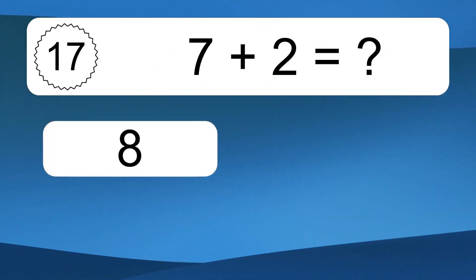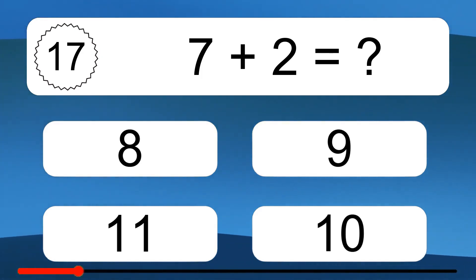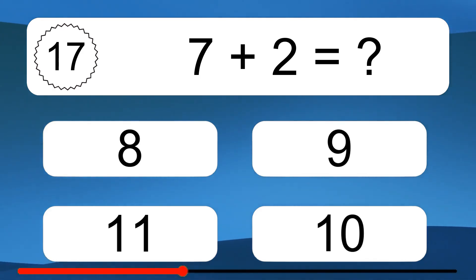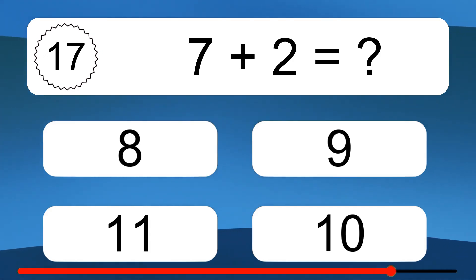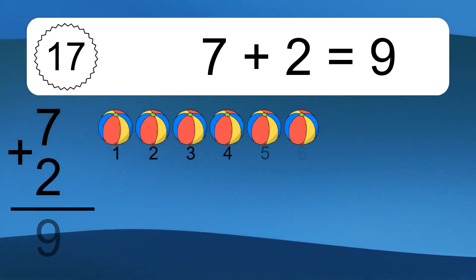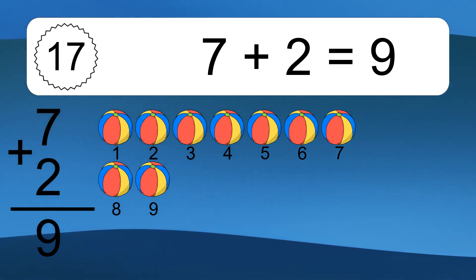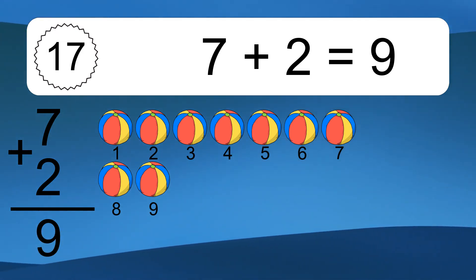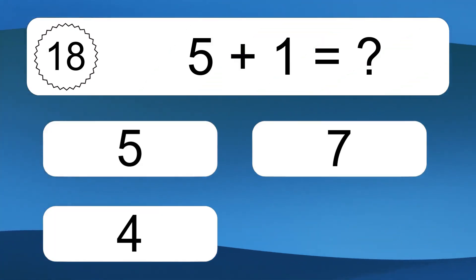7 plus 2 equals what? 7 plus 2 equals 9. Let's count it. 1, 2, 3, 4, 5, 6, 7, 8, 9.